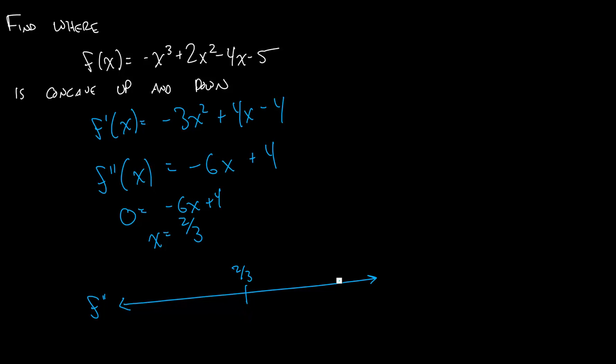And then all we need to do is in all the intervals in between our zeros, we say well if I plug in a point in one of these intervals, is f double prime positive or is it negative? And that'll tell me if it's concave up or concave down.